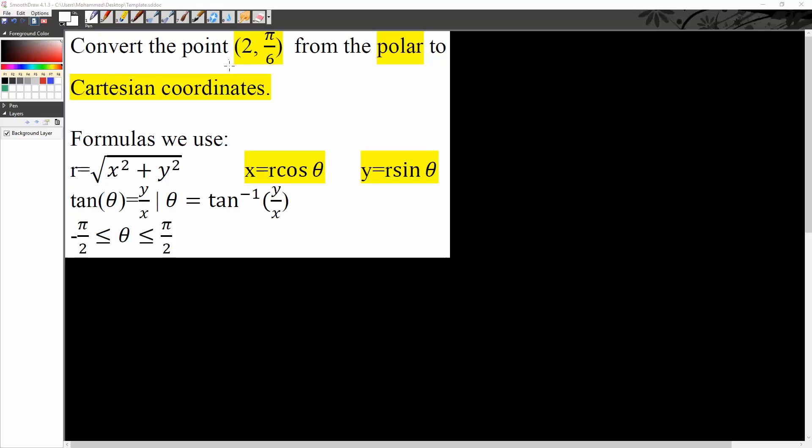Okay, in this problem we want to convert the point (2, π/6) from polar coordinate to Cartesian coordinate.